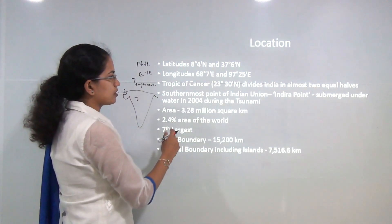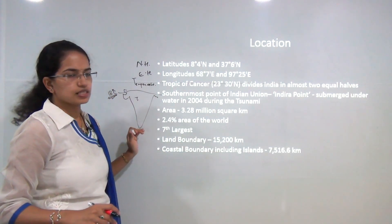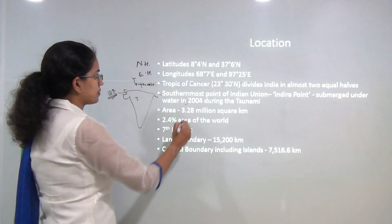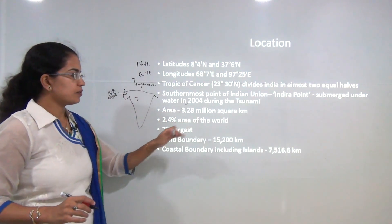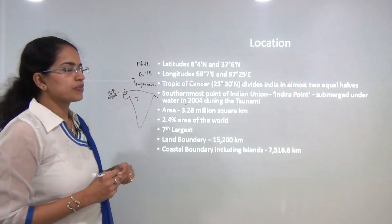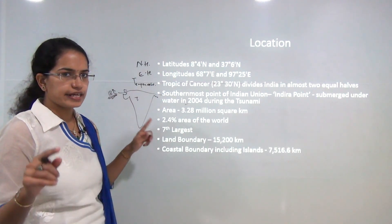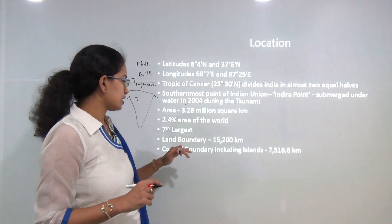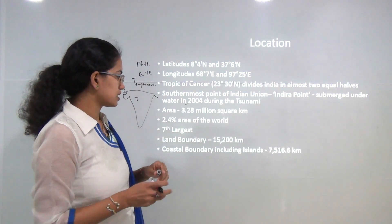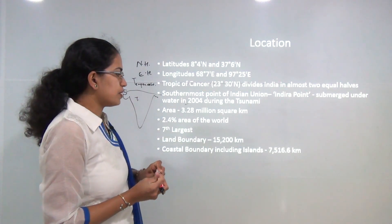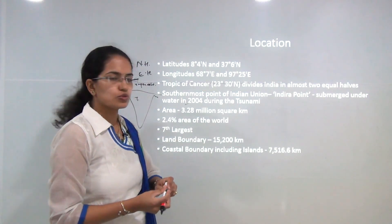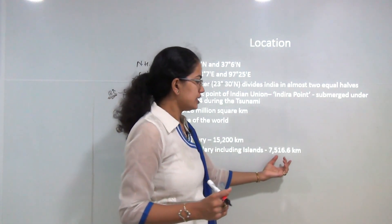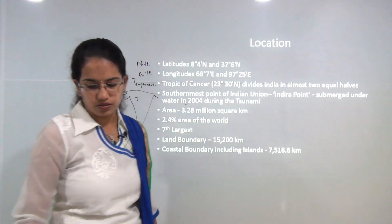The southernmost point of the Indian Union is known as Indira Point; however, this point was submerged in the 2004 tsunami. The total area of India is 3.28 million square kilometers — India accounts for 2.4 percent of the total world land area and is the 7th largest country by area. The land boundary is 15,200 kilometers and the coastal boundary, including the islands, is 7,516 kilometers.